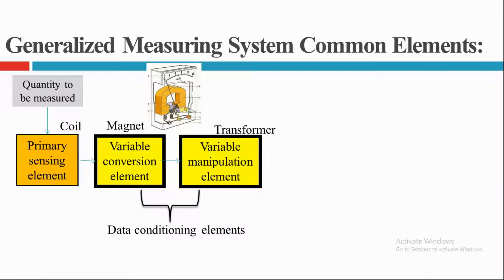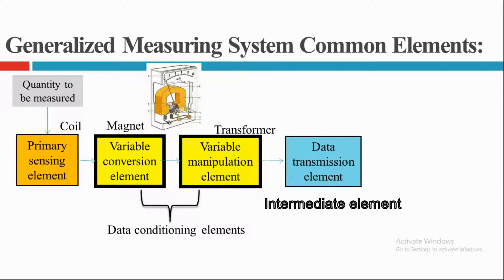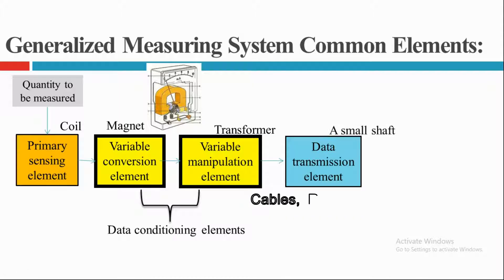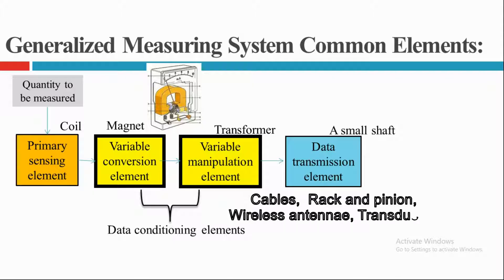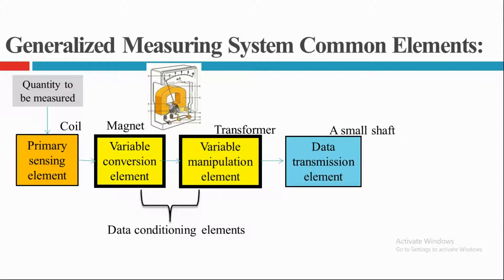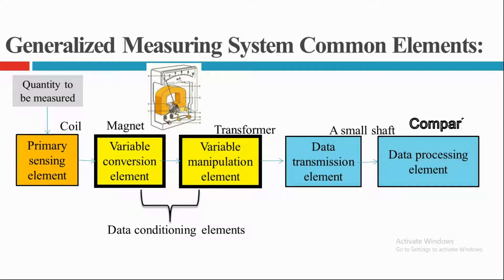The next element is the data transmission element, which is the intermediate stage of an instrument. Its main purpose is to communicate or transfer information to the next device. It may be a shaft and gear assembly, a rack and pinion, a cable, or antennas. The next one is the data processing element, which is used for comparison of data — comparing the actual value to the standard value.